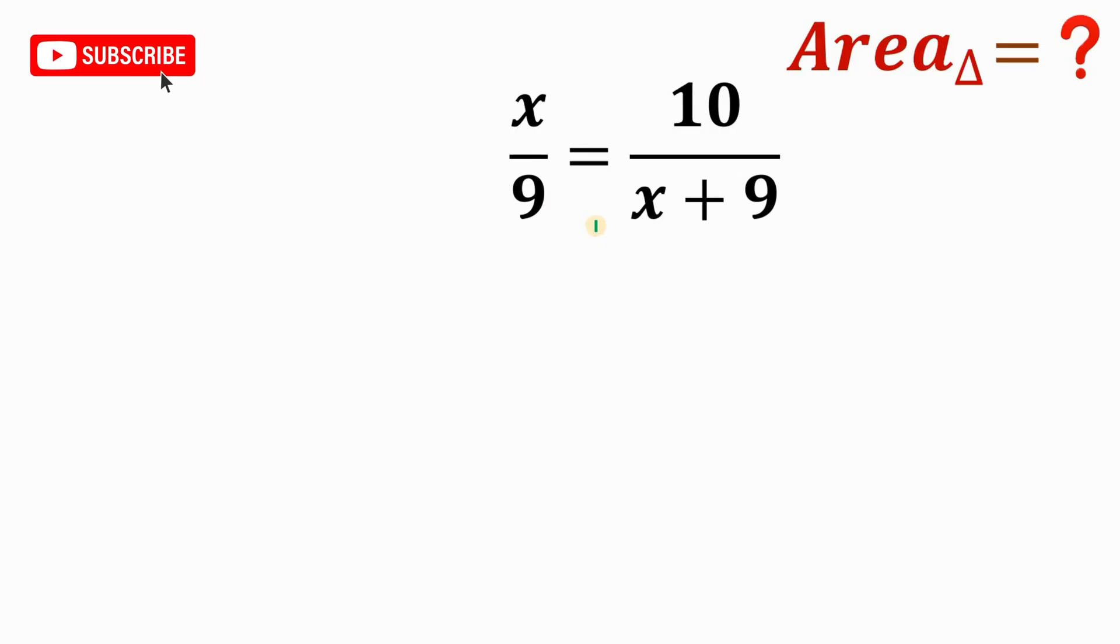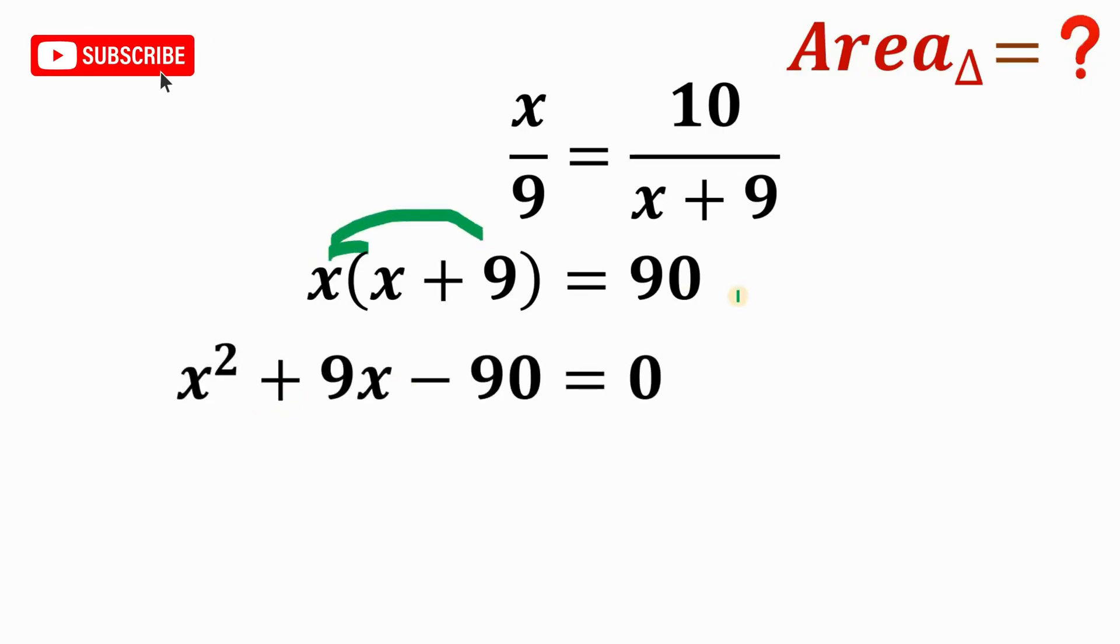Now, to solve for the value of X, let's cross multiply. So X multiplied by X plus 9 equals 90. Next, distribute this X to X and 9. We have X squared plus 9X equals 90. Then subtract 90 on both sides. Then equate to 0.